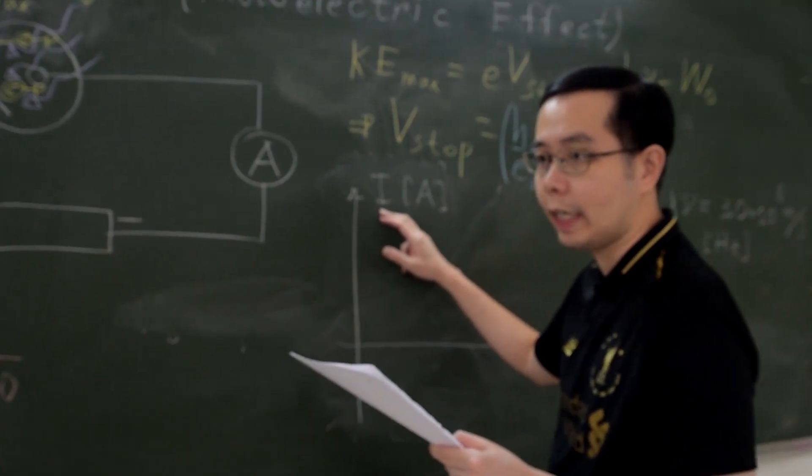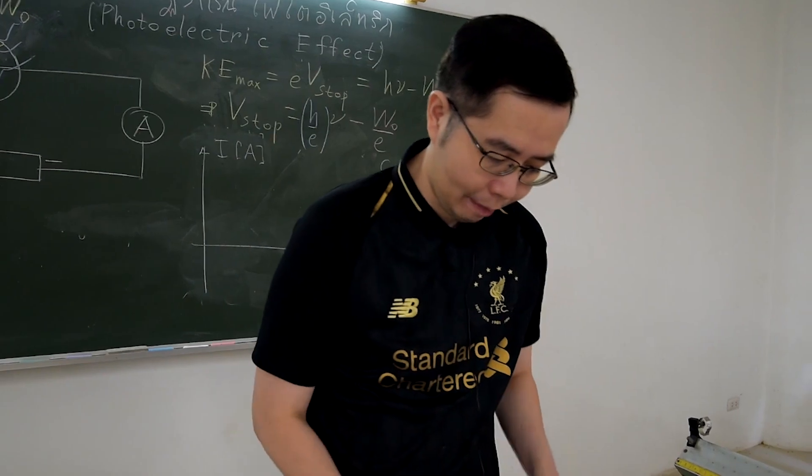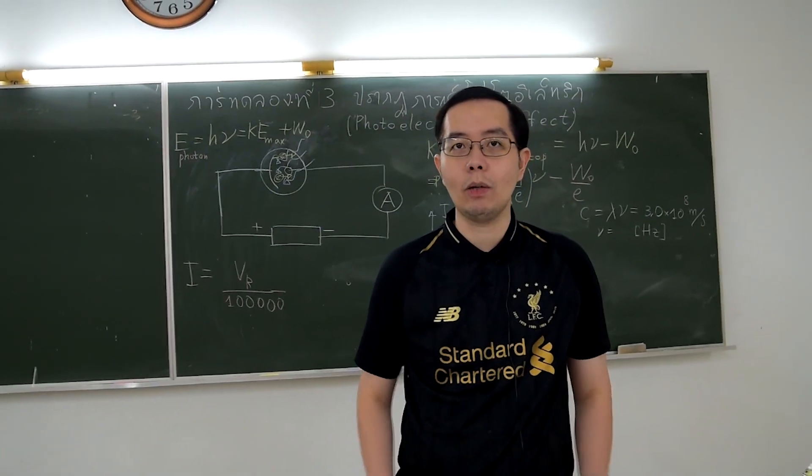Then plot graph between the photocurrent as y-axis and the aperture diameter as x-axis. That's all for second part. Thank you.